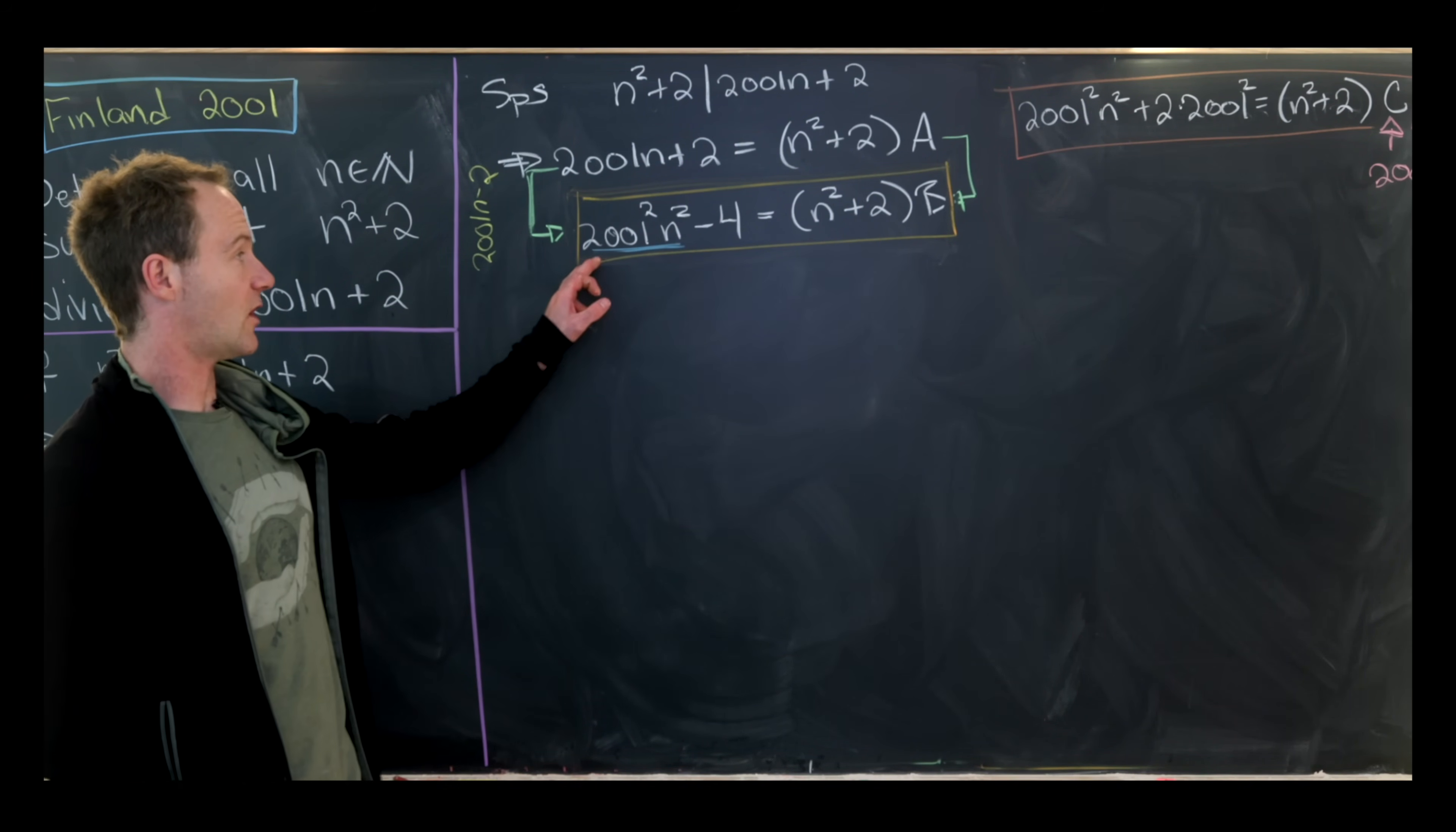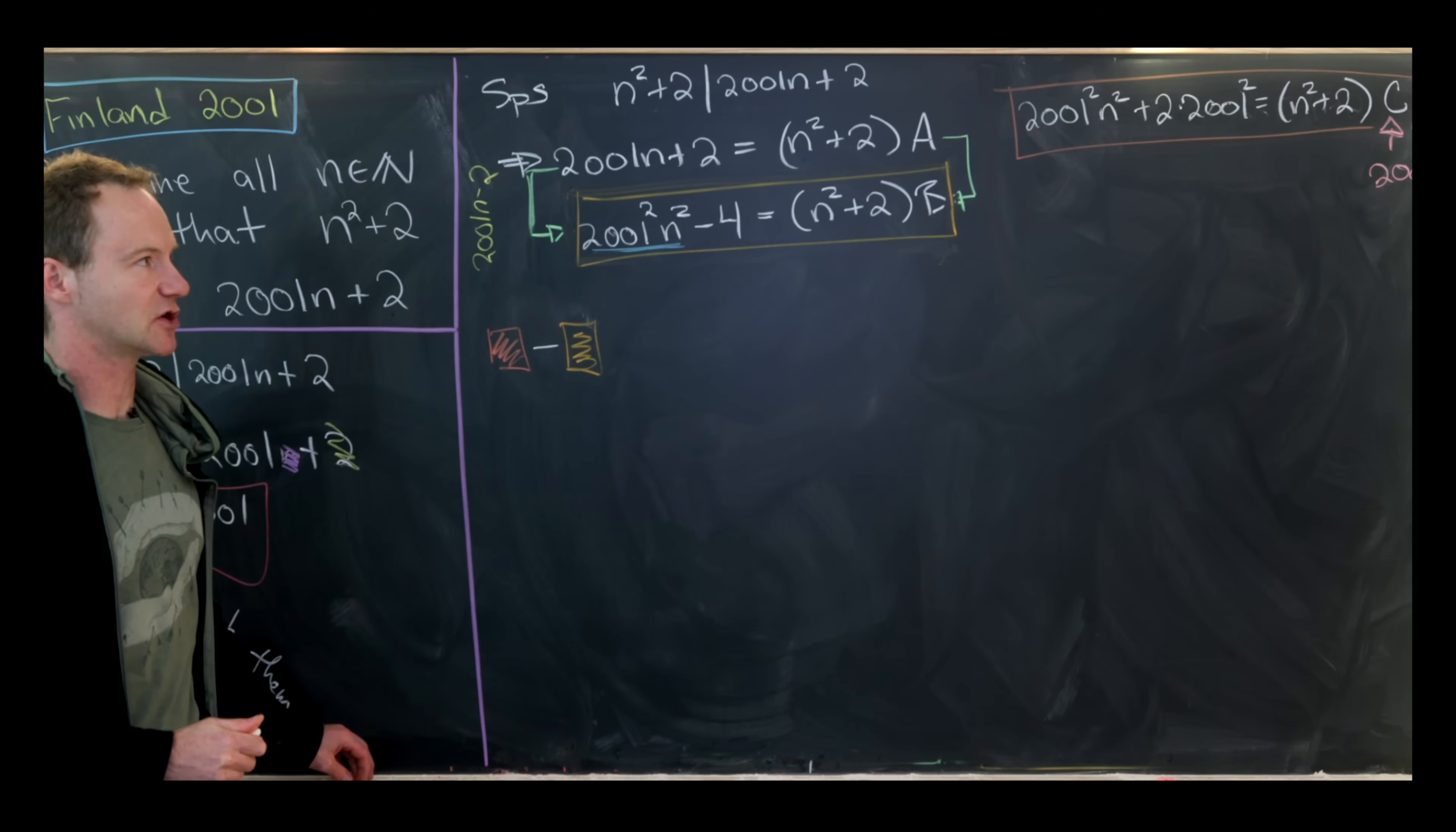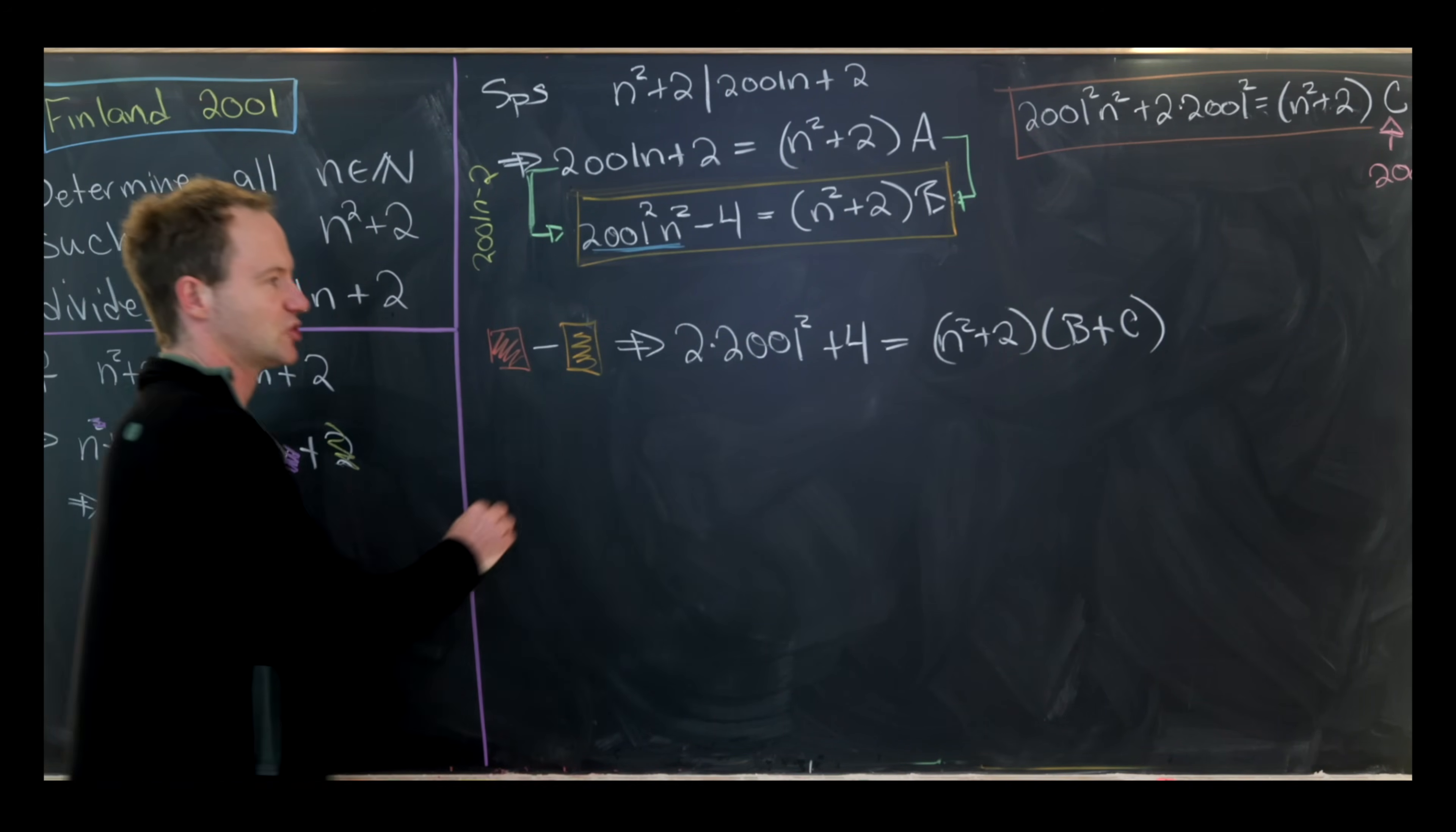Notice they both involve 2001² times n² and a multiple of n² + 2. So I can take a linear combination of these. In fact, maybe it would be something as simple as taking the brown equation minus the orange equation, and that'll cancel the n² term out from the left-hand side. So in fact, what we'll get is 2 times 2001² + 4 equals n² + 2 times B plus C. So what does this mean?